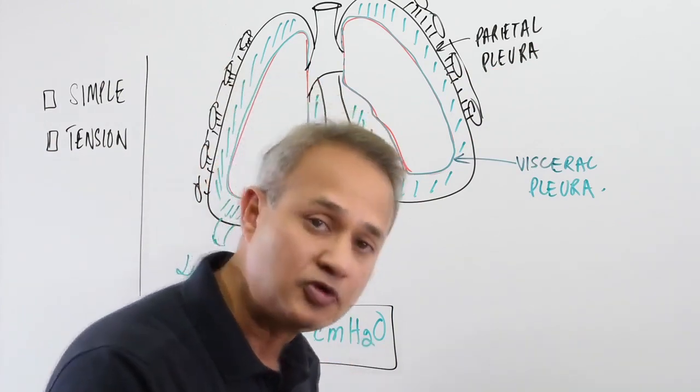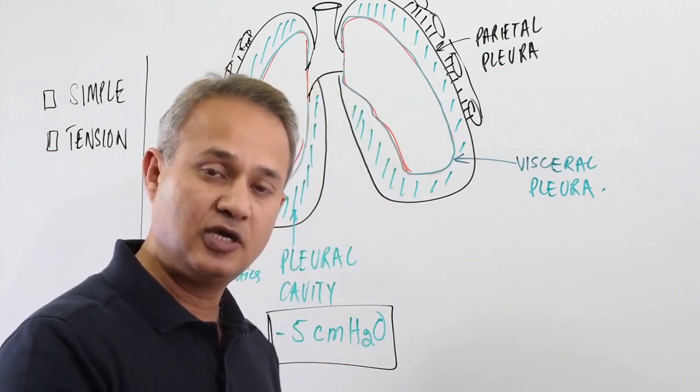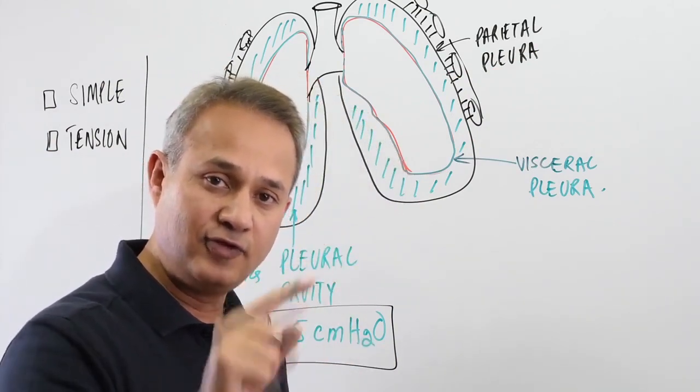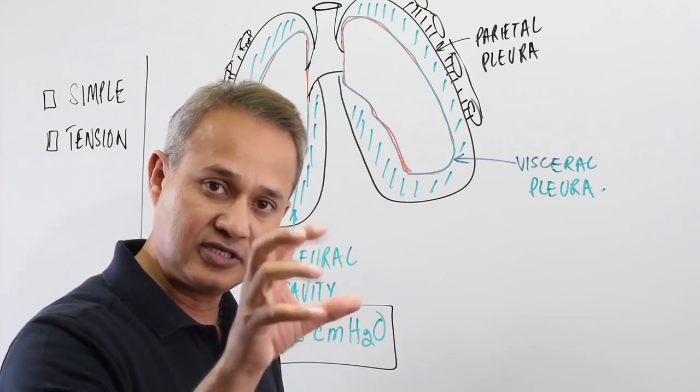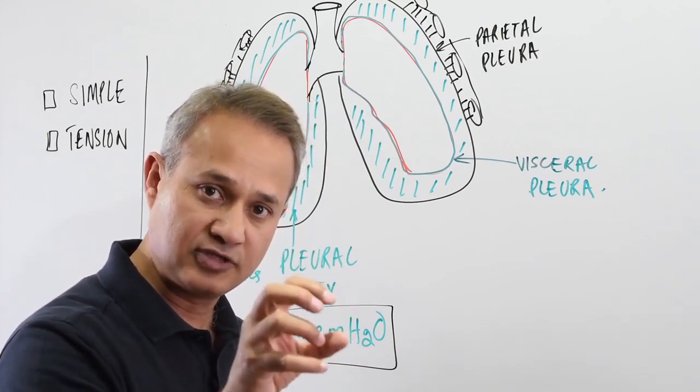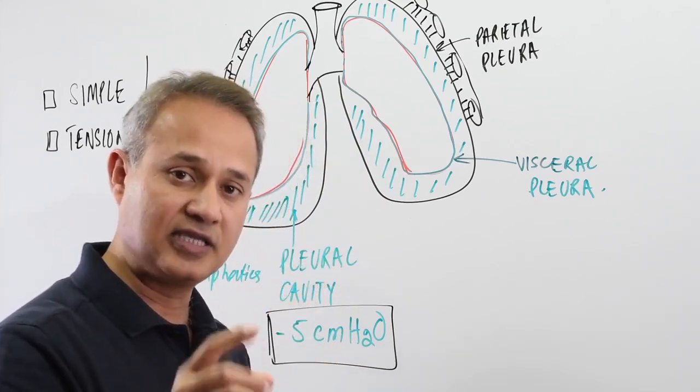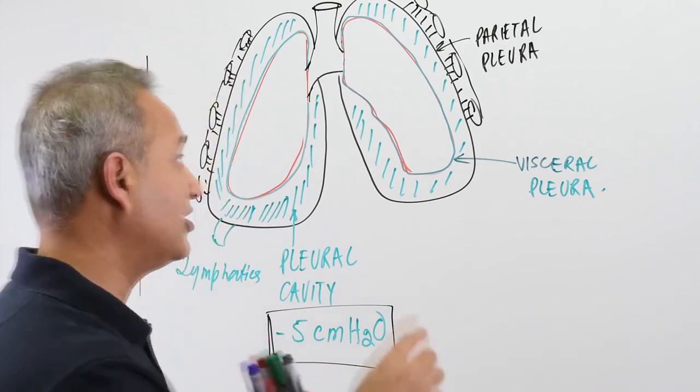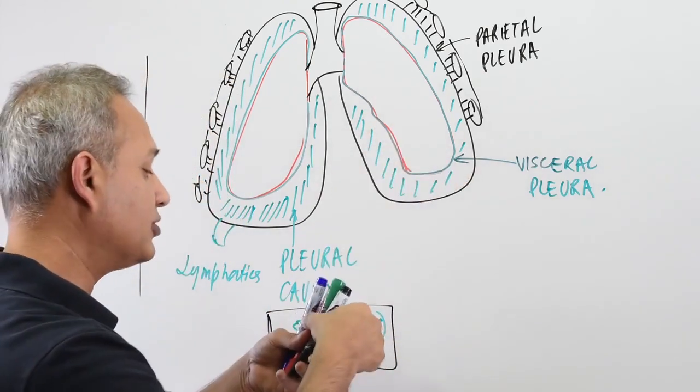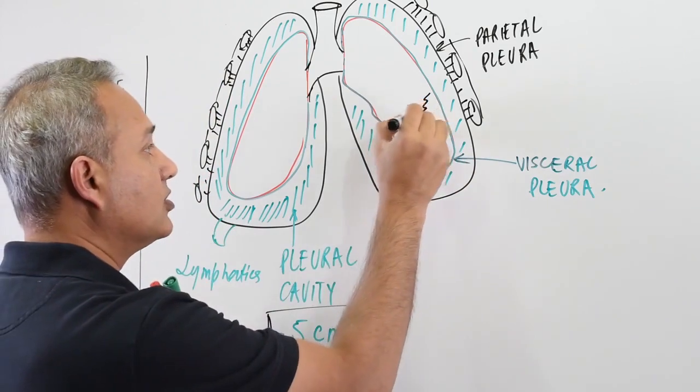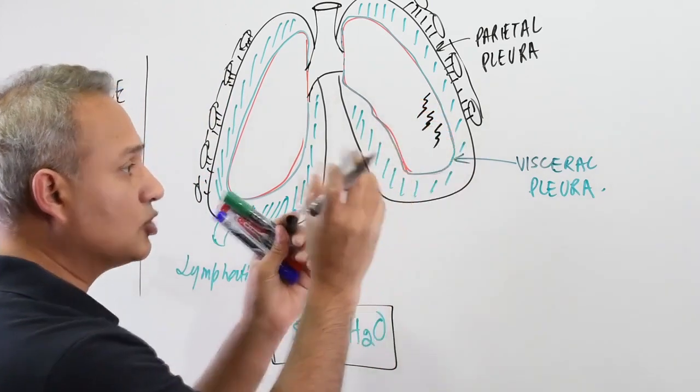What contributes to that tendency to collapse? We know that there is the fluid-air interface problem or surface tension generated by that, and secondly there is the surface tension generated by elastin and collagen fibers that are trying to recoil.